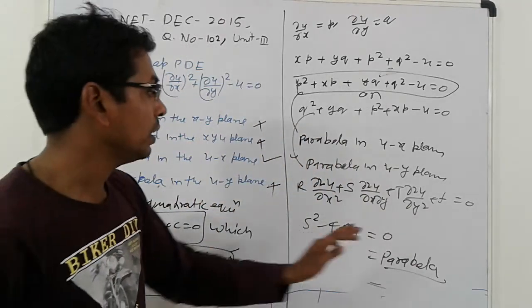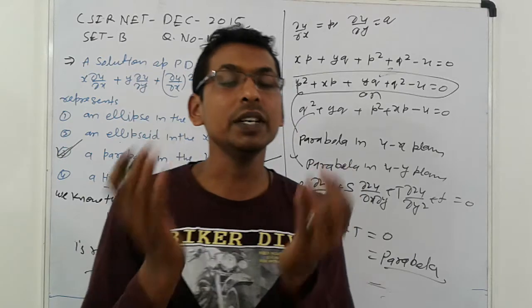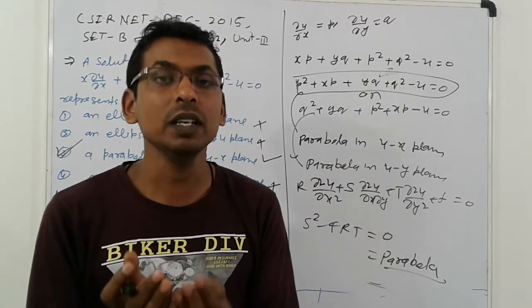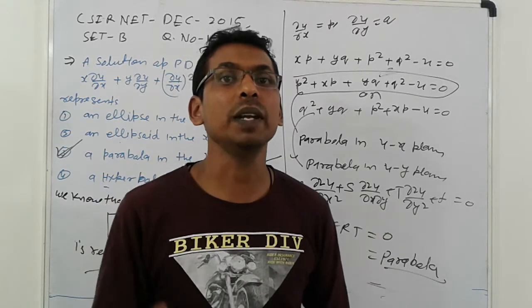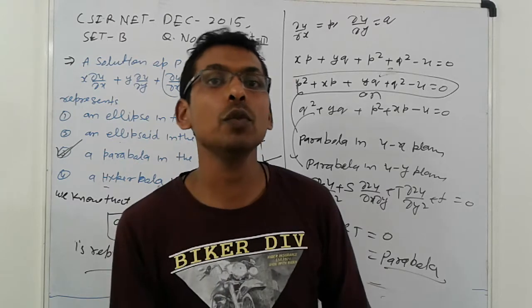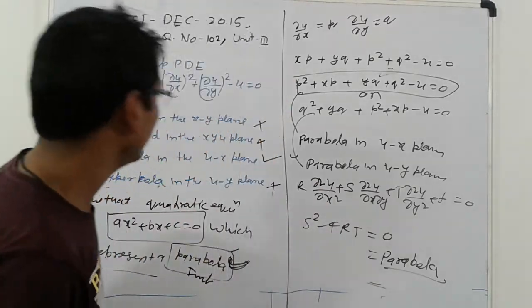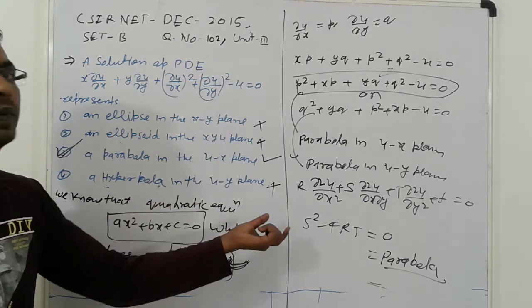Okay, parabola is represented by. But in that case, friends, which is not decided. Okay, which is not decided. There is a parabola in u-x plane, parabola in u-x plane, or parabola in u-y plane. So I think that is a suitable method to find out the solutions.